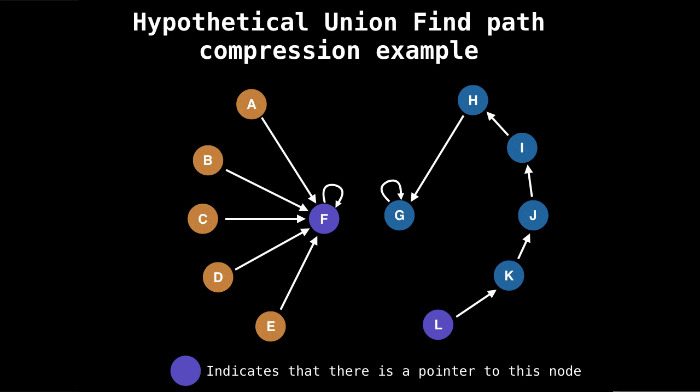And in doing so, every time we do a lookup on either A, B, C, D, or E, in constant time, we will be able to find out what the parent or the root node is for that component. Because we immediately point to it, we don't have to traverse a sequence of other nodes.